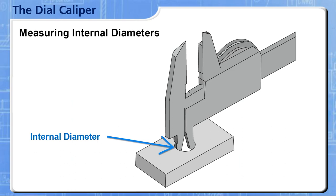The internal jaws may measure a hole smaller than it actually is because they're offset and also because the flat caliper jaw is trying to measure a round diameter. The smaller the diameter, the greater the error.